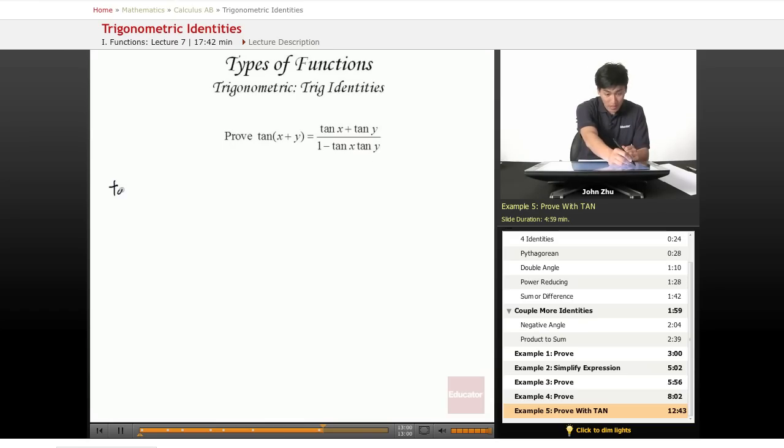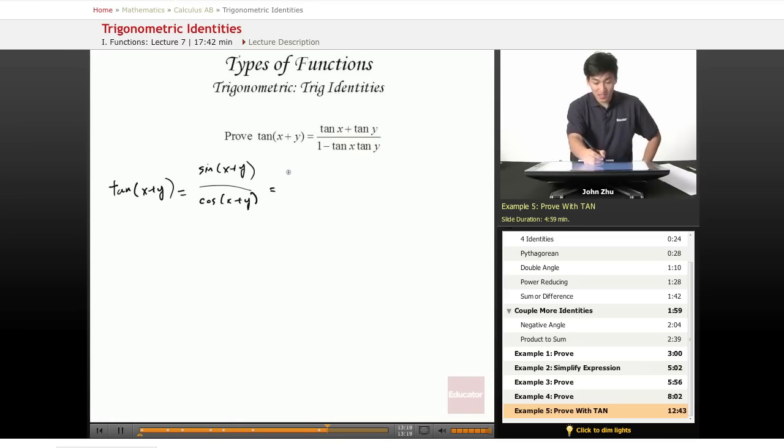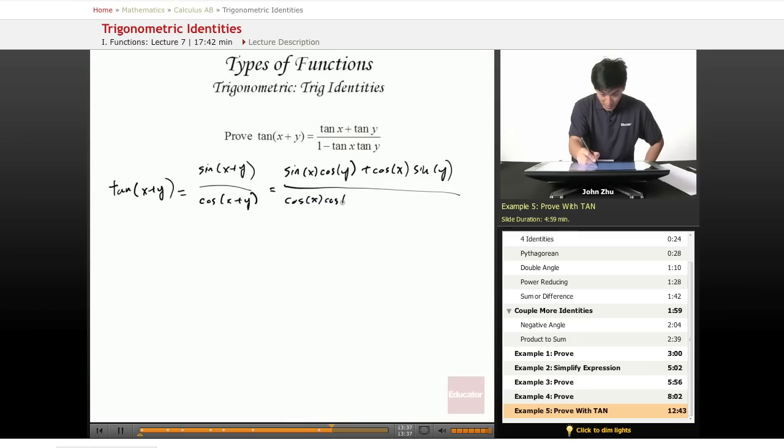So let's go ahead and get started and say that tangent of x plus y equals sine of x plus y over cosine of x plus y. And if we expand this sum, the sine sum term out, by identity we get sine of x cosine of y plus cosine of x times sine of y all over cosine of x cosine of y minus sine of x times sine of y.